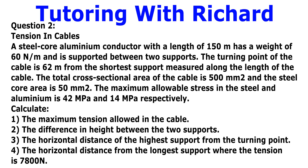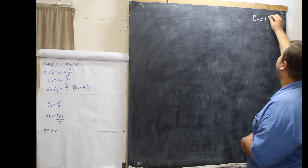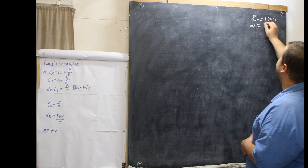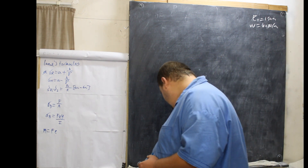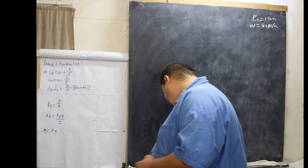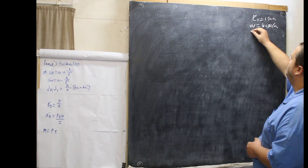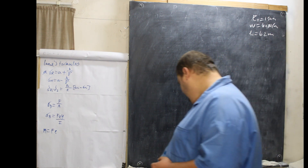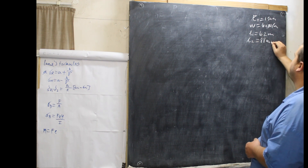Our question states: a steel core aluminium conductor with a length of 150 metres, so our total length is 150 metres. It has a weight of 16 newtons per metre. It is supported between two supports. The turning point of the cable is 62 metres from the shortest support, so L1 is 62 metres and L2 is 88 metres.